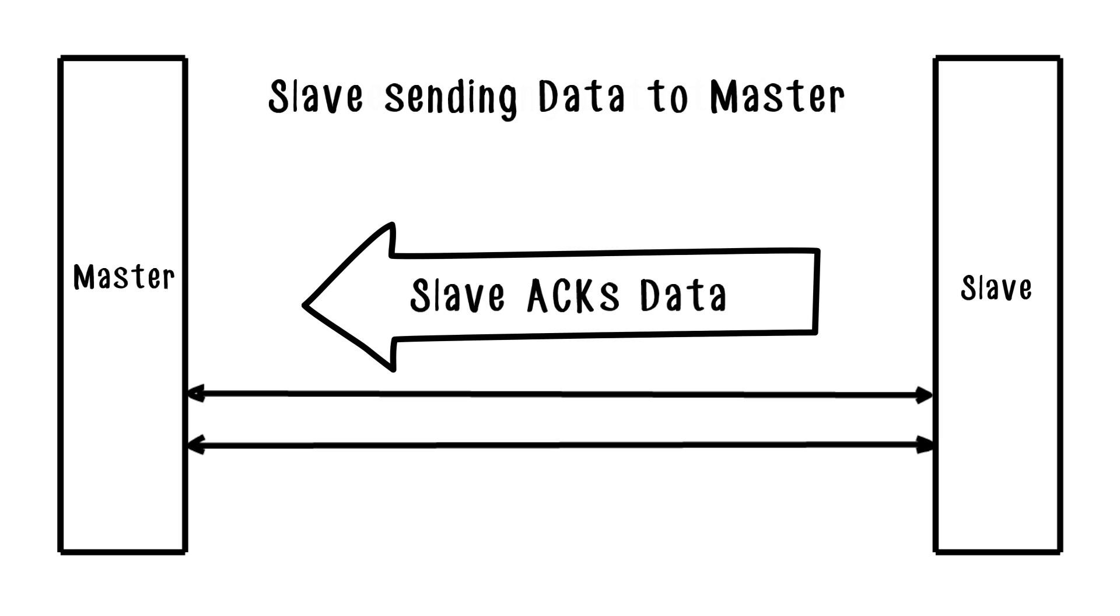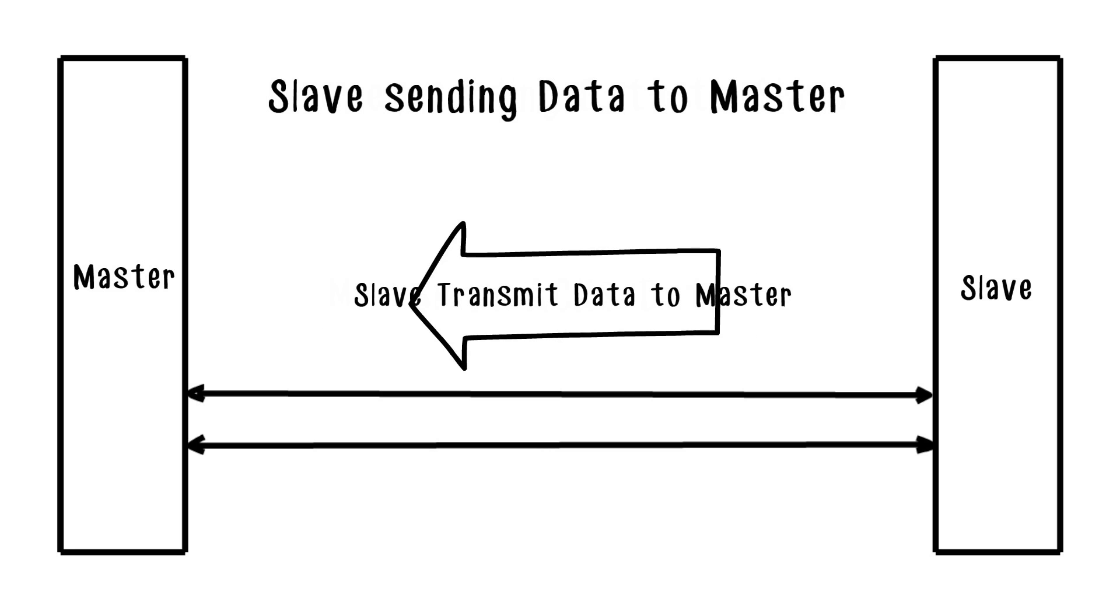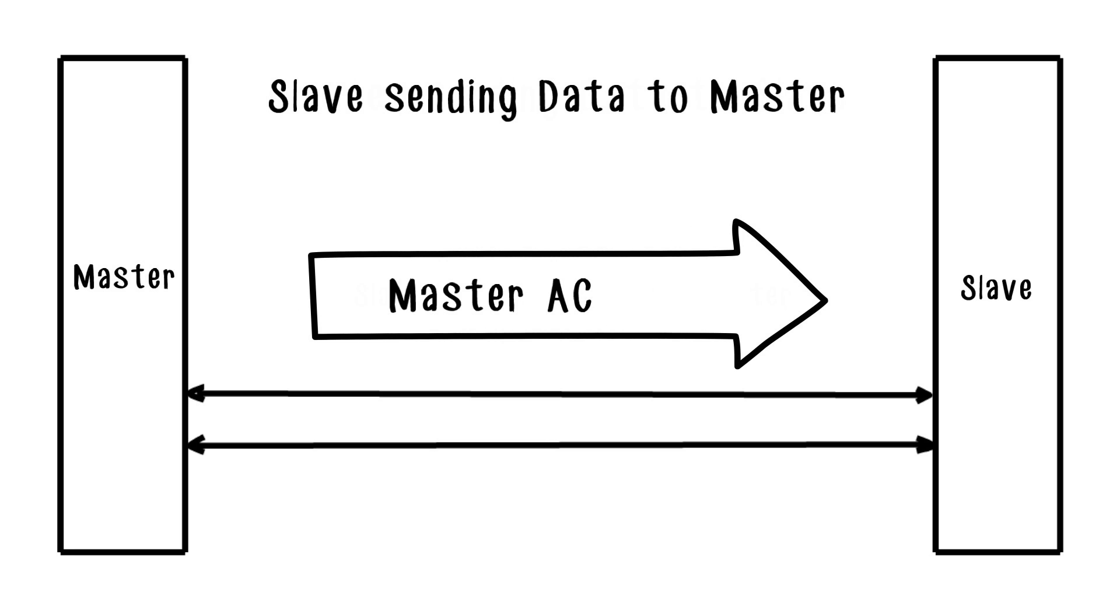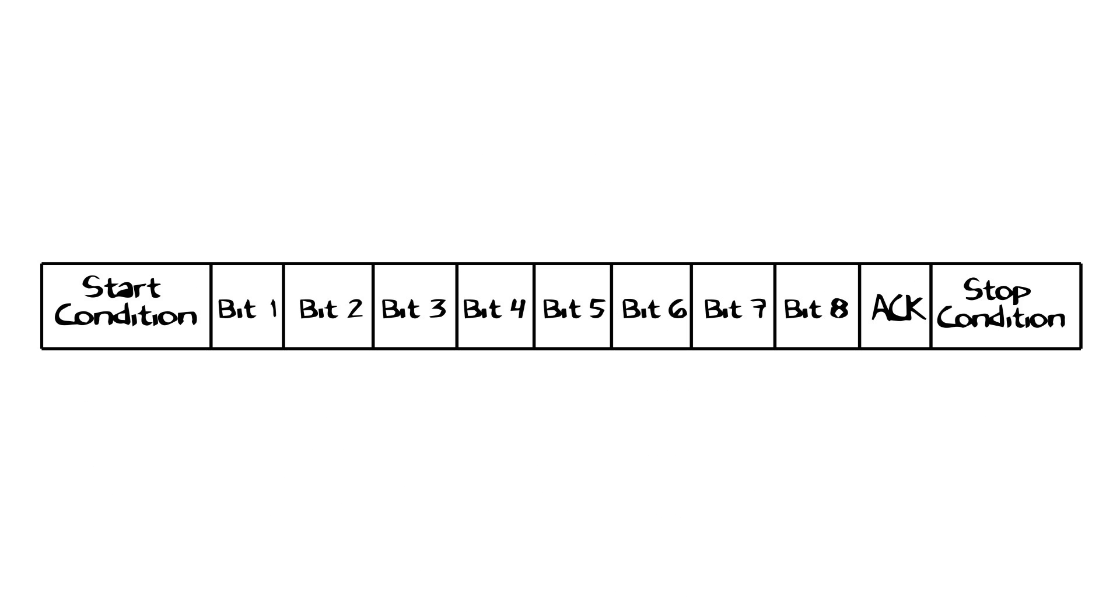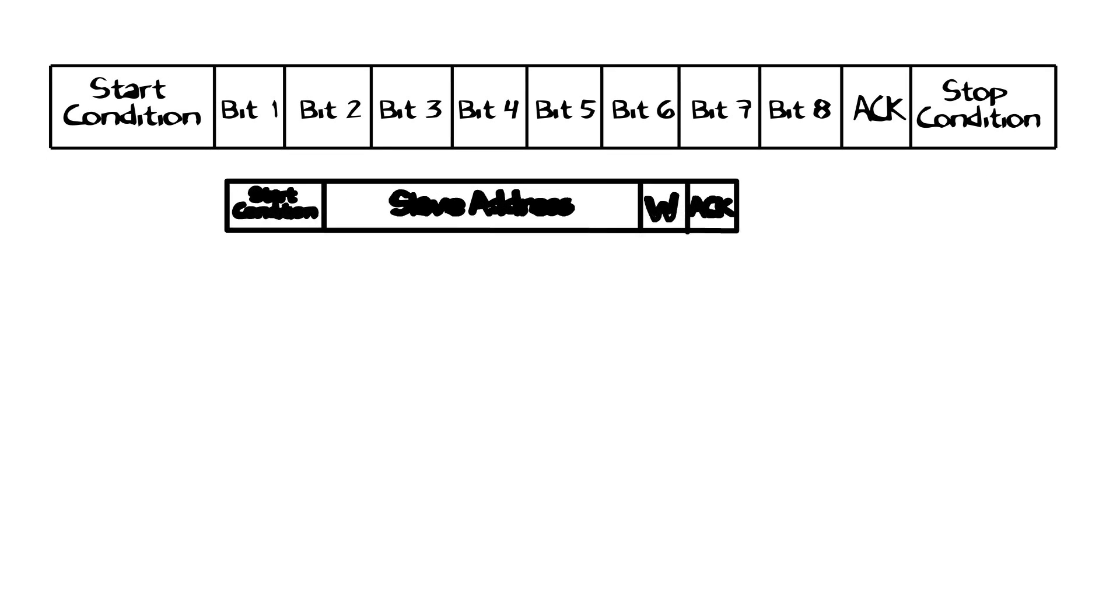Send received data flows in both directions. The master generates the clock and initiates communication with the slave. The slave receives the clock and responds when addressed by the master. To transmit, the master sends a start bit followed by the 7-bit address of the slave with which it wishes to communicate, followed by a write bit.